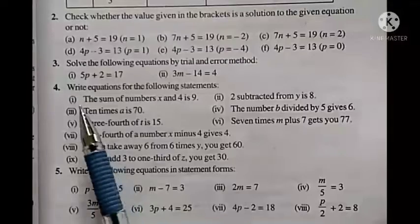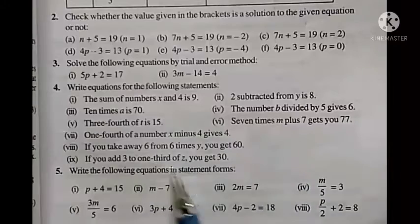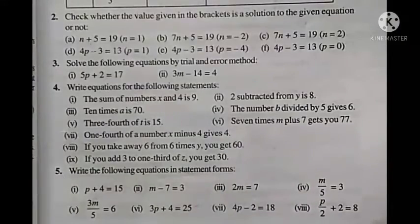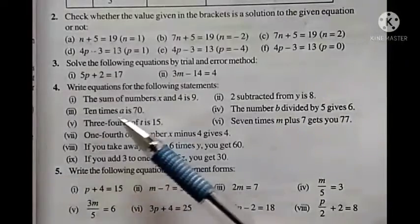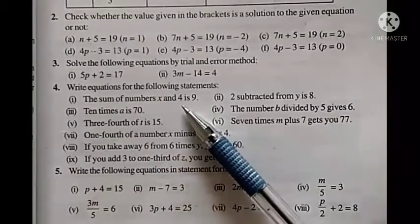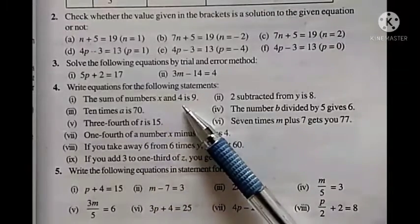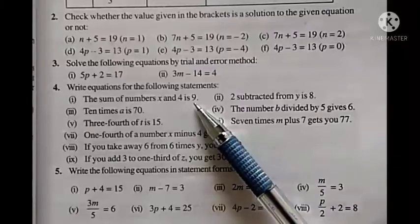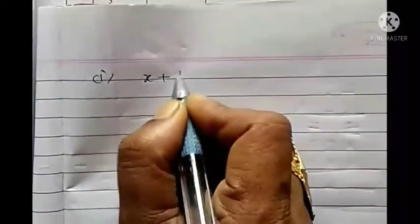Question 4: Write equations for the following statements. Statements are given and you have to write equations for them. First one says: the sum of numbers x and 4 is 9. It says two numbers x and 4, their sum means plus, is 9. So the equation is: x plus 4 equals to 9. That's it.